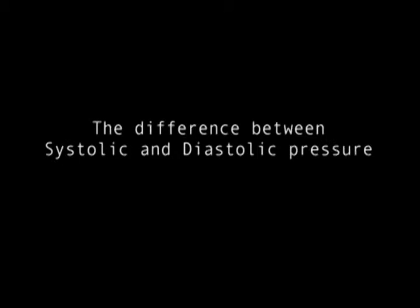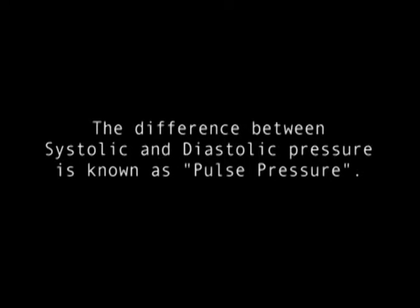The difference between systolic pressure and diastolic pressure is known as pulse pressure, and it averages around 40 mm of mercury.